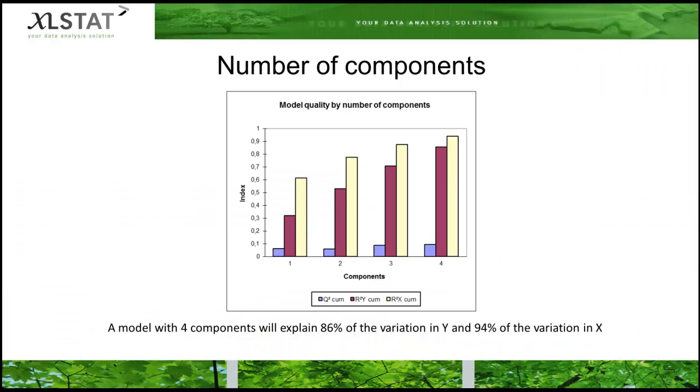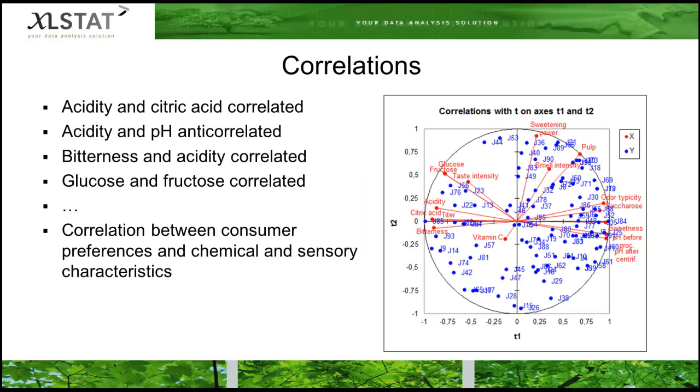The model will be constituted of four latent factors. The explained variation will be 86% for y and 94% for x.